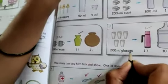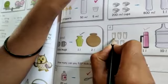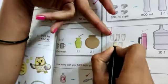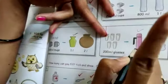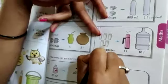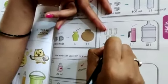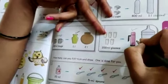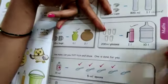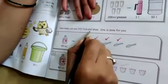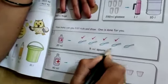Here 1 thermos is having 1 liter. You have to put here. Here see, how many can you fill? Tick and show, one is done for you.